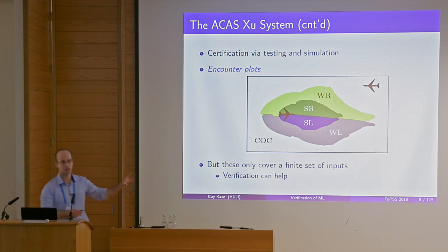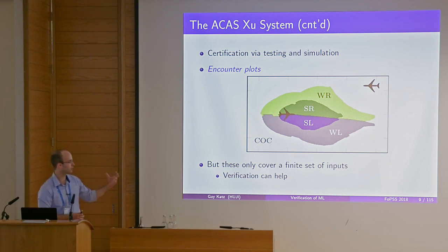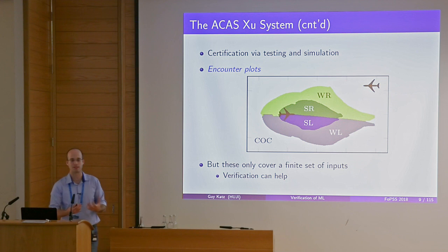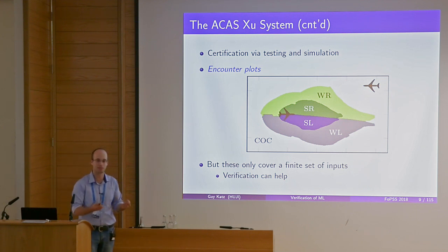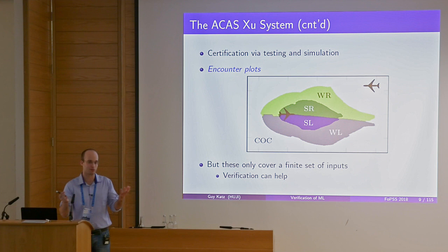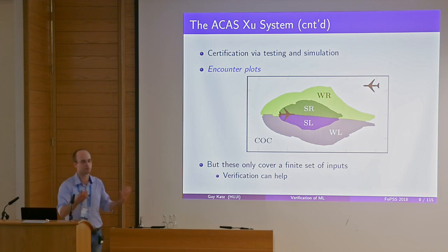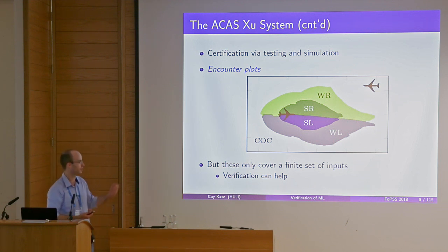They produce encounter plots for the lookup table too, but for the table they're not as afraid of unexplained behavior since it's a more commonly used technique. Mainly because neural networks are new and they really don't understand what's going on inside — there could be some catastrophic failure that simply hasn't been sampled — they really want to be sure.